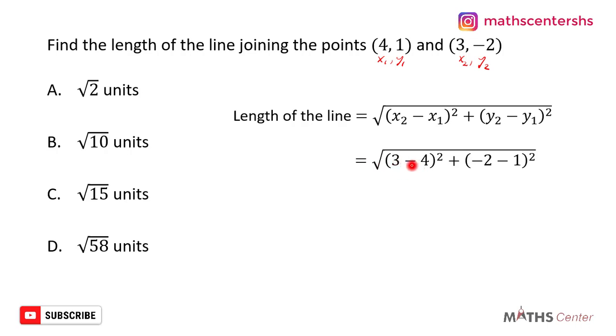3 minus 4 gives us -1. Negative 1 squared will give us 1. Negative 2 minus 1 will give us -3. Negative 3 squared will give us 9. And so we'll have square root of 1 plus 9. 1 plus 9 will give us 10.